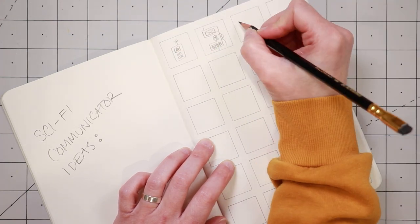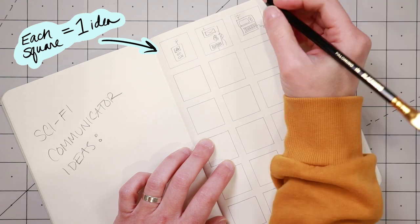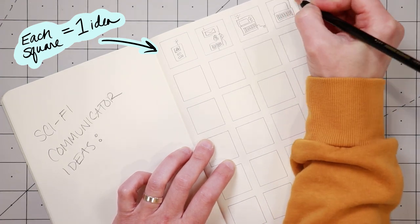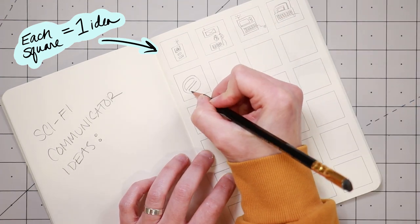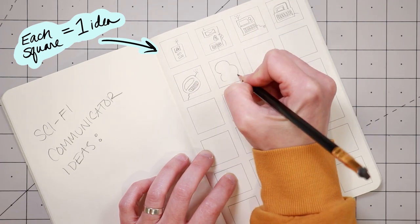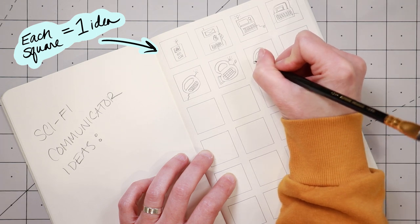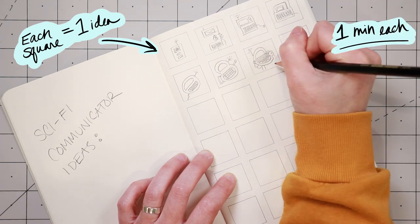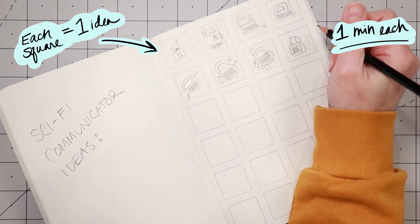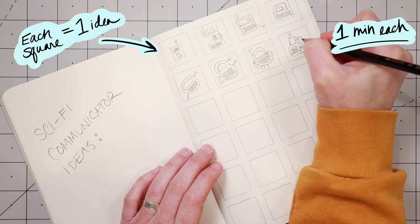Each of these squares will hold one thumbnail sketch. Each thumbnail sketch is one idea, or one take on your main idea. And the exercise is to sit down and fill the entire page with little thumbnail sketches, and to do it pretty quickly. So only spend about 1 minute on each sketch.